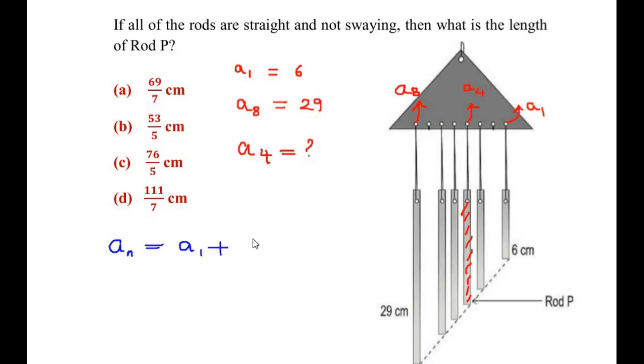A1 plus (n - 1) times D. An is the nth term, A1 is the first term, n minus 1, n represents the total number of terms, and D is the common difference.